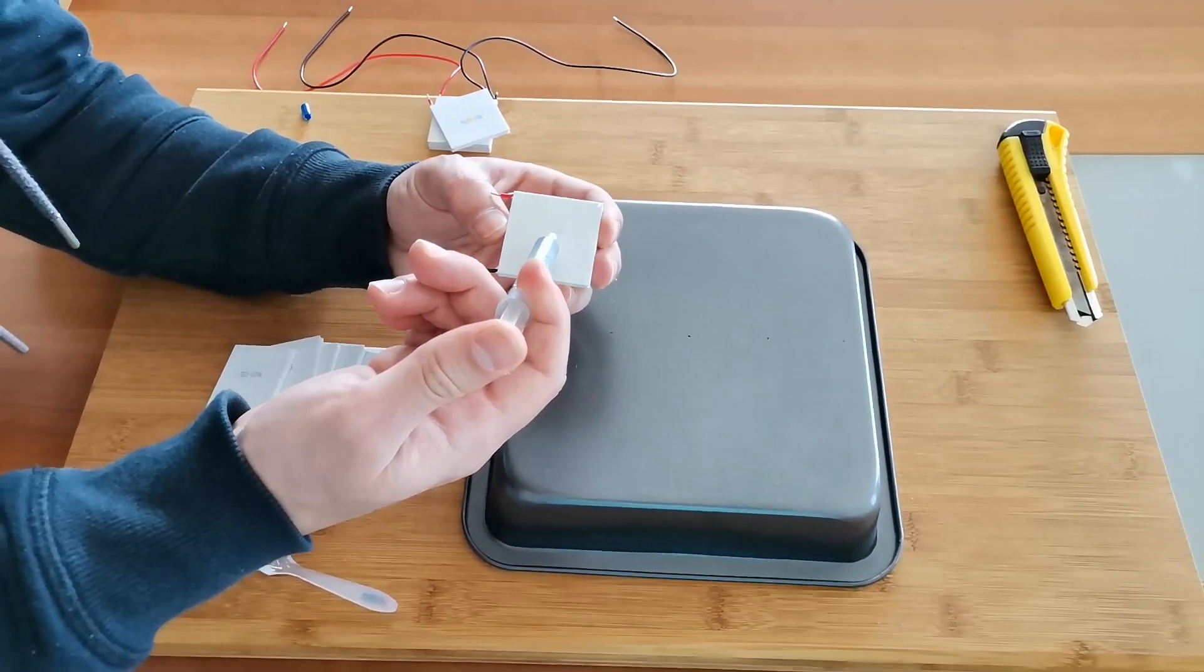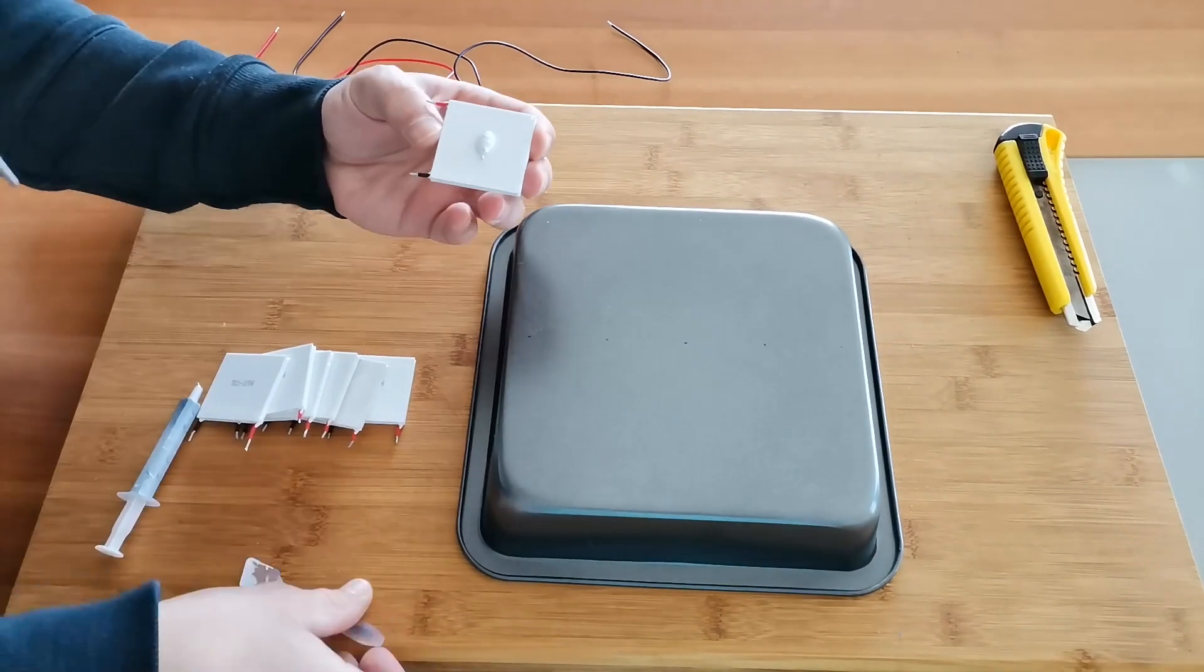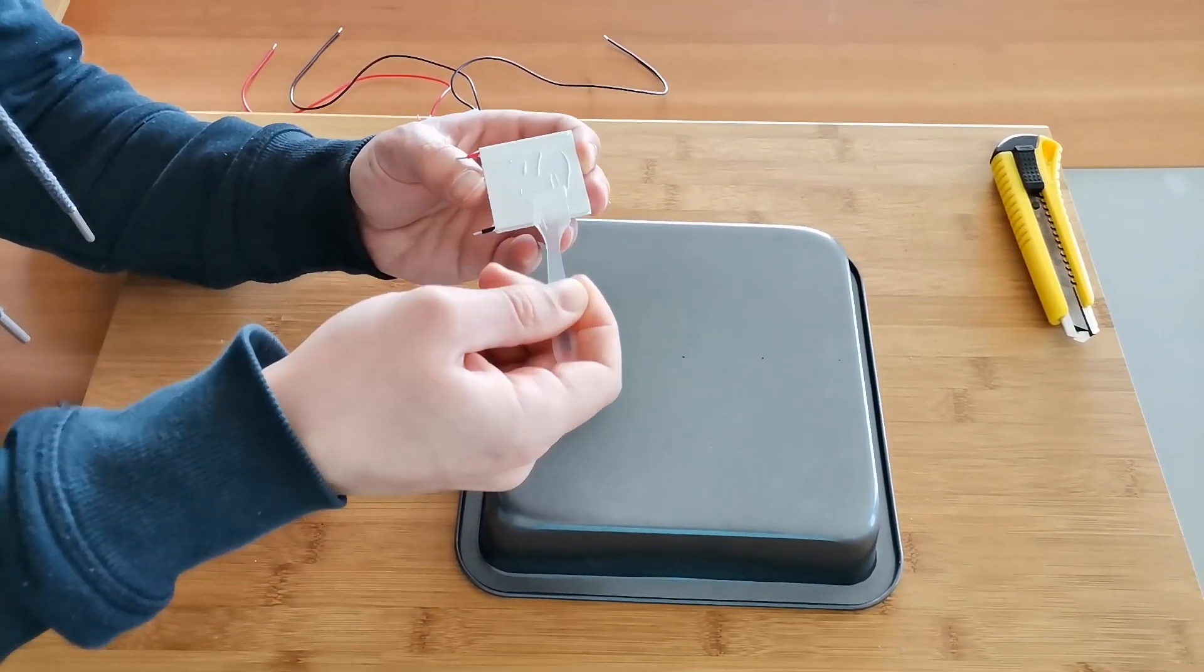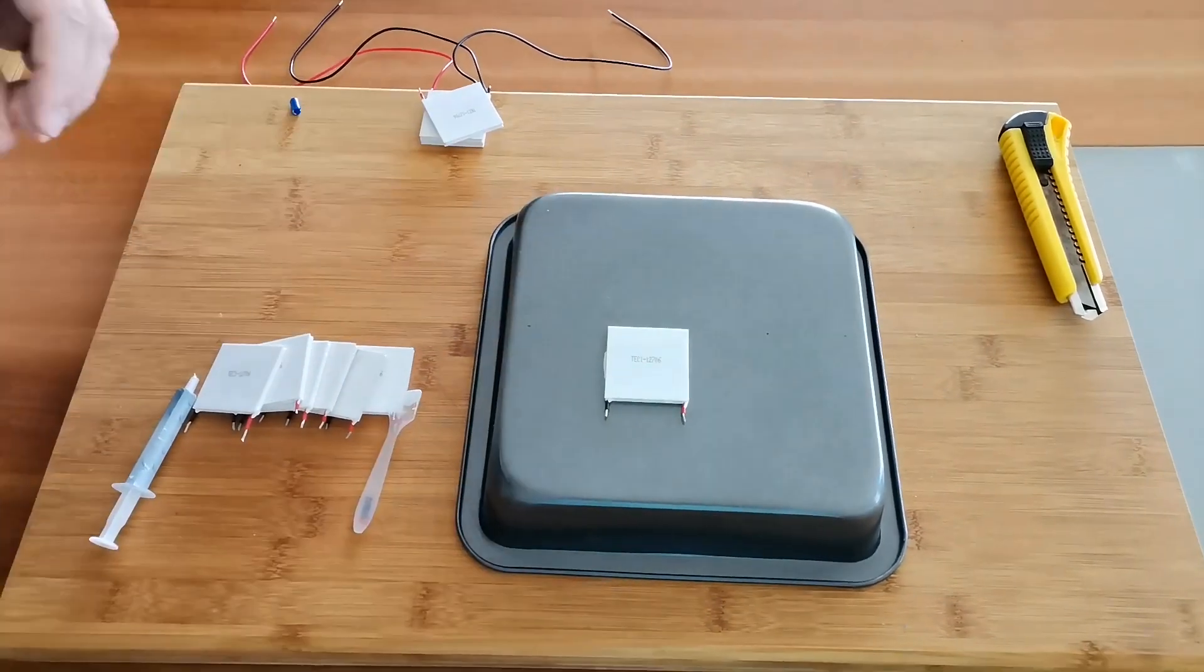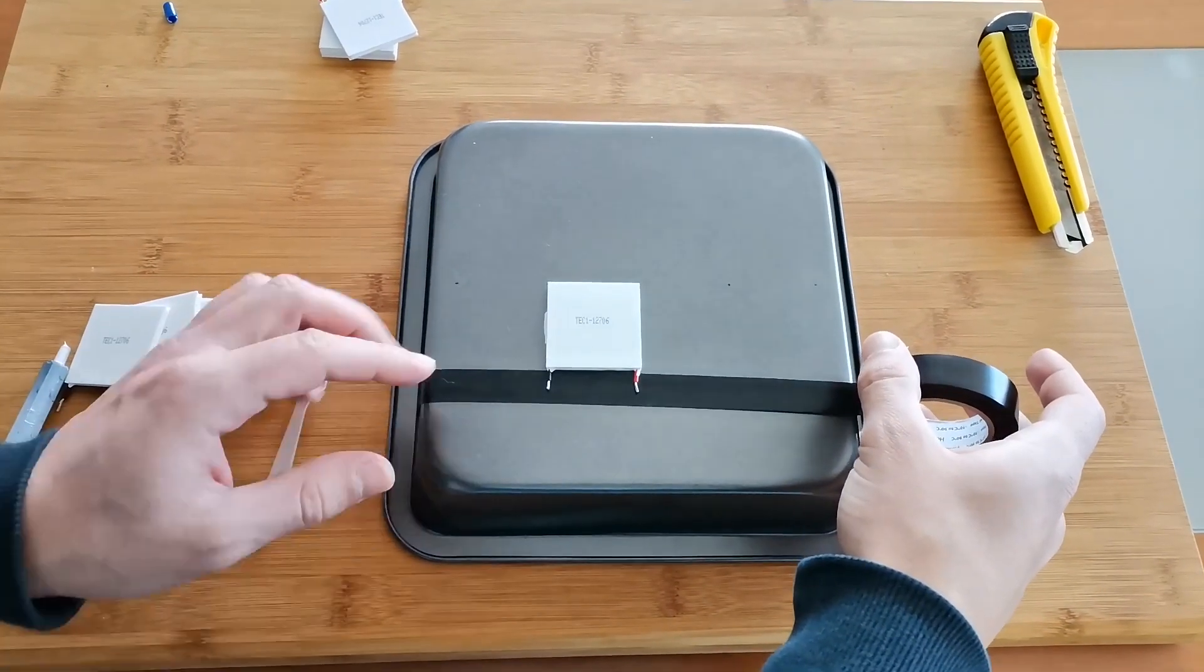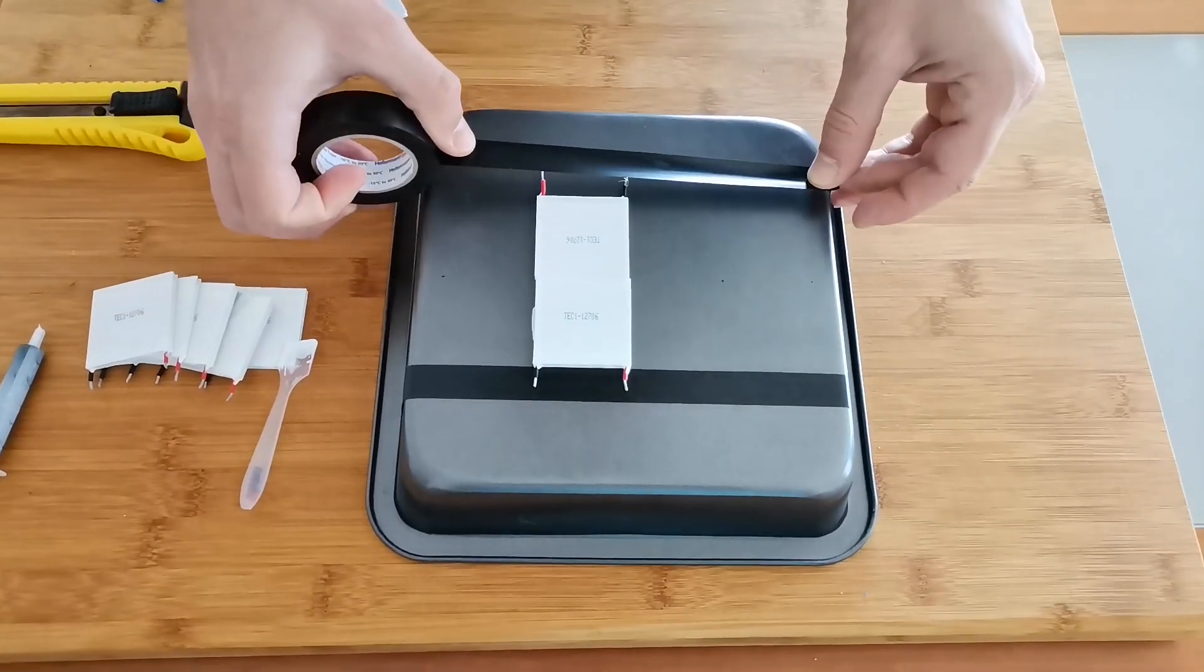Okay, let's start by installing the thermoelectrical coolers, which I'm going to call TEC from now on, on an aluminium tray. To prevent wires touching the tray and shorting out, we should insulate with insulation tape.